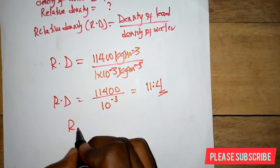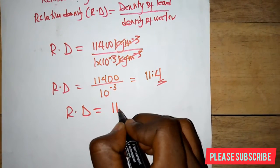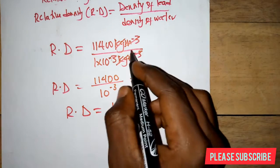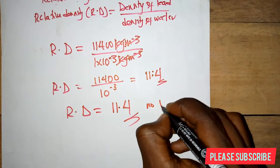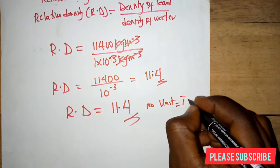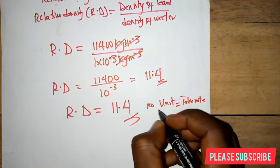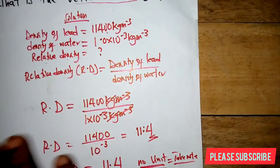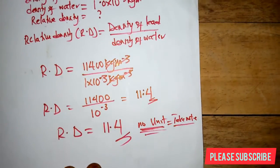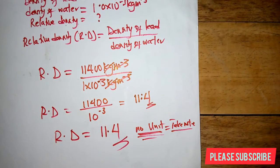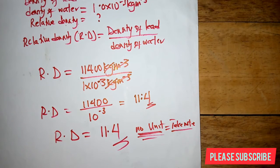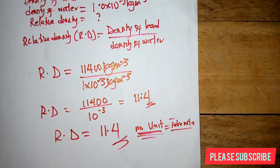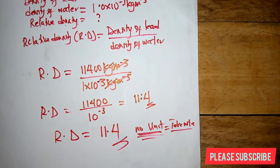Therefore, our relative density is 11.4 and it has no unit — take note of this. That is what we have for the relative density. Thank you very much. Make sure to check out the next video on relative density on your screen, and please subscribe and hit the notification bell.